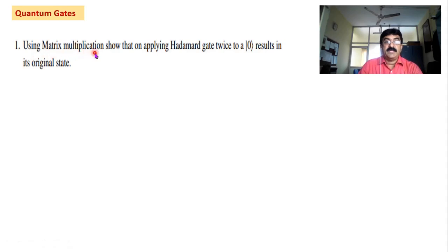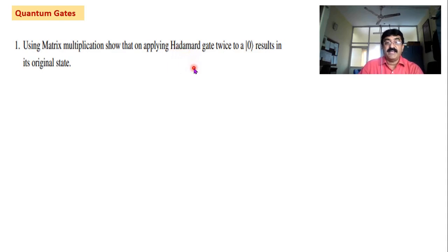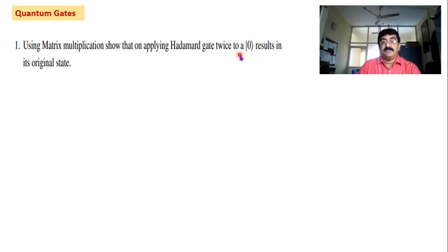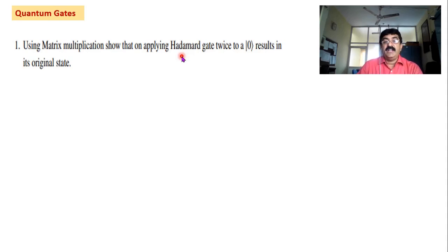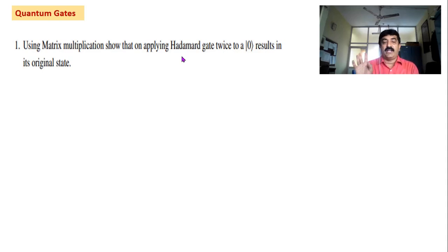Here comes the first question: using matrix application, show that on applying the Hadamard gate twice to |0⟩ results in its original state. What this means is you have to take H×H and operate it on |0⟩ — when you operate on |0⟩, it remains |0⟩ only. So we have to show that H×H = I, because I is the identity matrix. The identity operator is like the number one — multiplying anything by one leaves it unchanged.